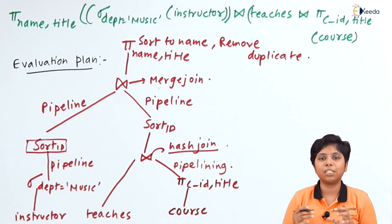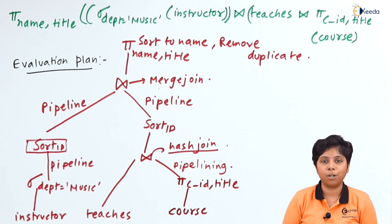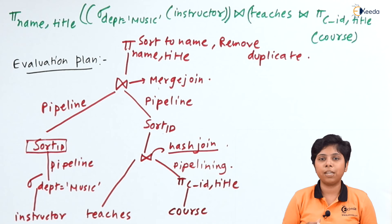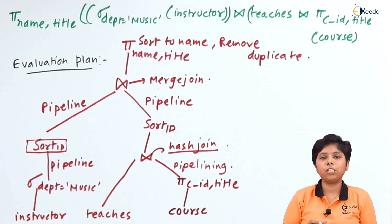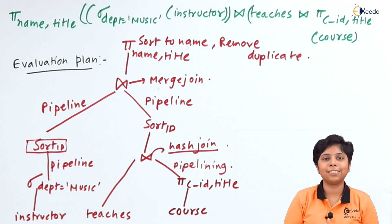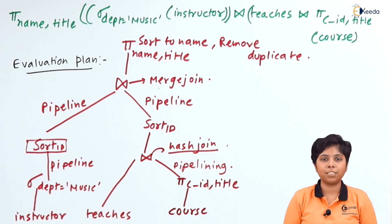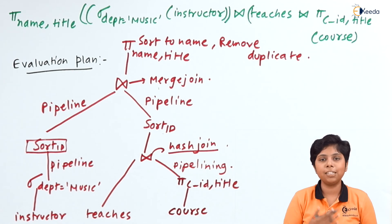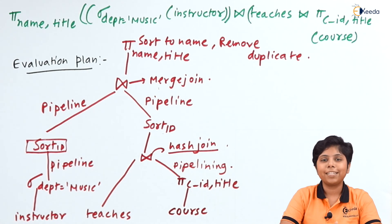The process is: generate evaluation plans for each expression tree built on the relational algebra, find the evaluation plan for each, then choose the most cost-effective one. We assess the cost of each plan in terms of disk transfers and disk seeks, choose the lowest-cost evaluation plan, and feed it to the execution engine. The execution engine then evaluates it and gives the desired result.